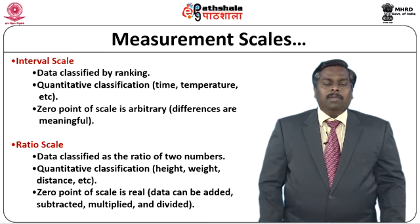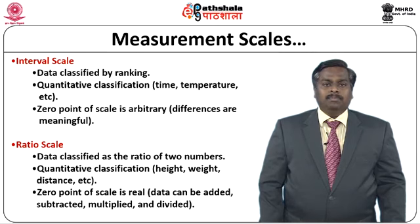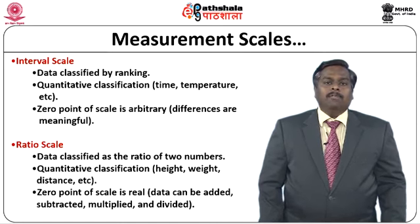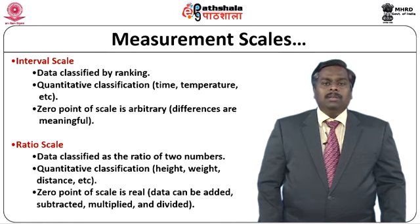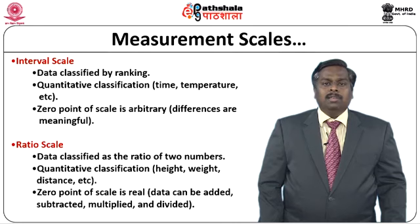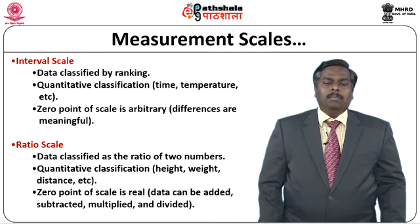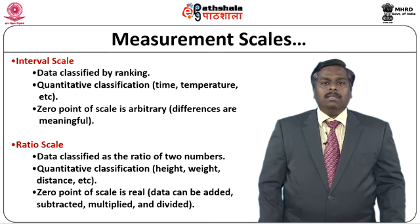When working with respect to an interval scale, the zero point of scale may be arbitrary in nature. For example, when representing temperature in Fahrenheit and we say it is zero, it does not actually mean the temperature is zero — there is some kind of molecular kinetic energy that exists, but we assign a label called zero. But when we represent the same temperature in the Kelvin scale, the zero value actually has an importance. So the zero point of scale is arbitrary in nature when dealing with interval scale.